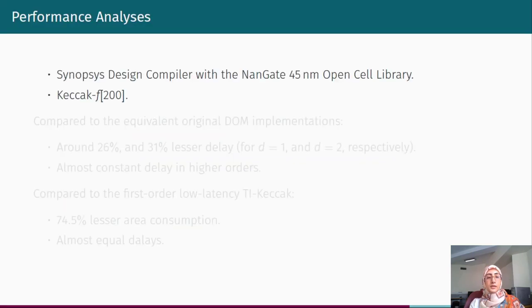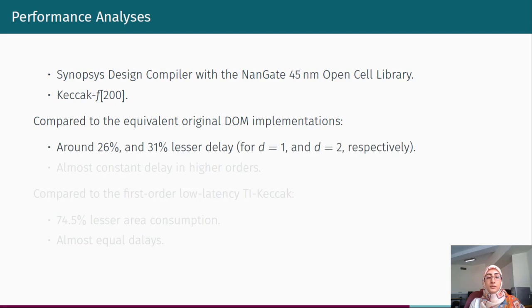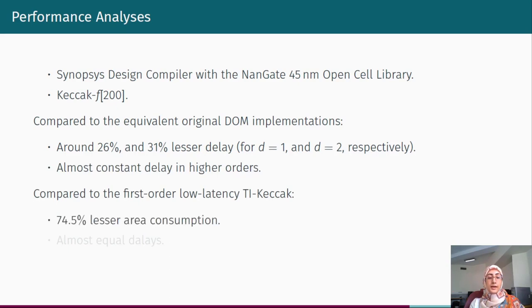In order to assess the performance of our design and to compare it with the state of the art, we have used Synopsys Design Compiler and focused on the implementation of one of the small size Keccak permutations with the state size equal to 200. The results show that compared to the equivalent regular DOM implementation, our implementation achieves around 26 and 31 percent lesser delay in first and second order securities respectively. Our design has almost constant delay in its higher orders. Compared to the first order low latency TI implementation of Keccak, our design had a 74.5 percent lesser area consumption while they have almost equal delays.